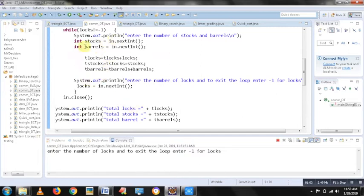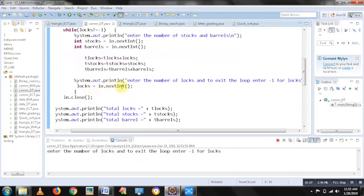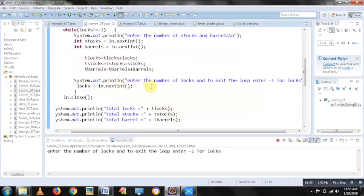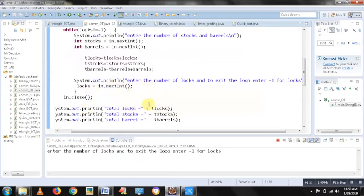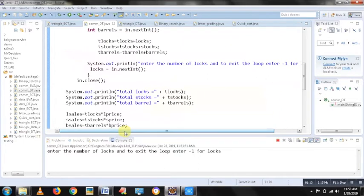And at some point of time, when I want to compute the sales, I would enter log as minus 1. That is sending minus 1 sentinel. So, once I send minus 1 sentinel, that is log is equal to minus 1. Next, I would print what is the total logs that were sold, total stocks that were sold and total barrels that were sold.